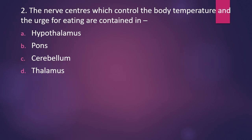Question number two: the nerve centers which control the body temperature and the urge for eating are contained in which part of the brain — hypothalamus, pons, cerebellum, or thalamus? In which part of the brain is the center for control of body temperature and urge for eating located? The correct answer is option A, the hypothalamus.